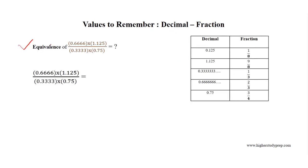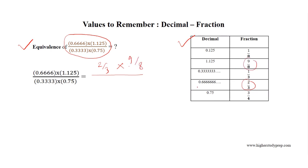Now, if we want to get the equivalence of a quantity, rather than setting each value in a calculator or working it on scratch paper, we can utilize the table. For example, we can write that the quantity equals 2 over 3 times 9 over 8, because 0.6666 equals the fraction 2 over 3, 1.125 equals the fraction 9 over 8, 0.3333 equals 1 over 3, and 0.75 is equal to 3 over 4.